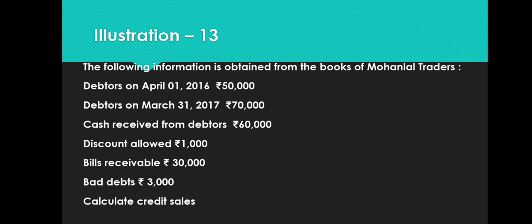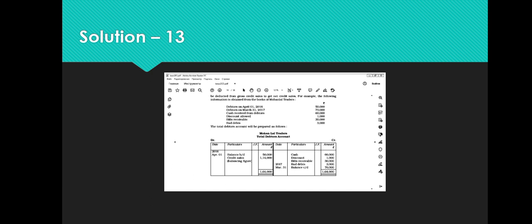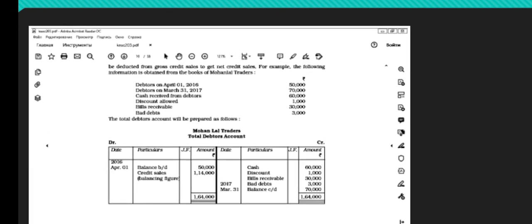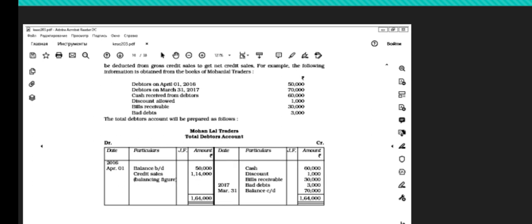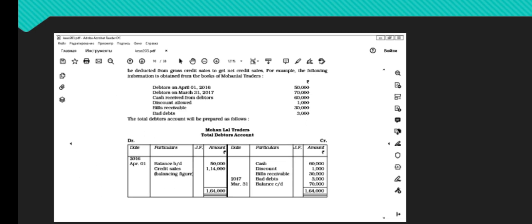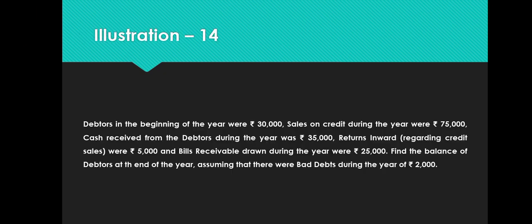Illustration: Opening debtors, closing debtors, cash received from debtors, discount allowed, bills receivable, and bad debts are given; find credit sales. Debtors account is prepared with all items at their correct positions. The balancing figure on the debit side = Rs. 1,14,000, which is the amount of credit sales. Follow the format carefully to get the correct figure.